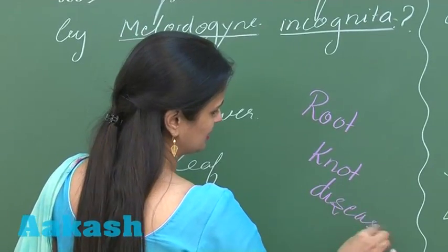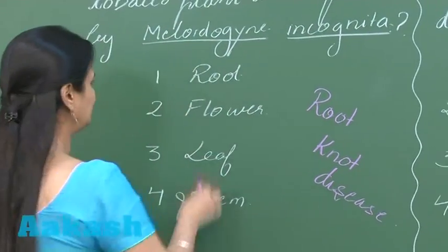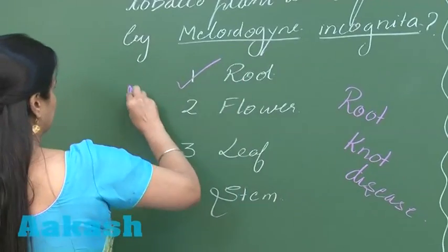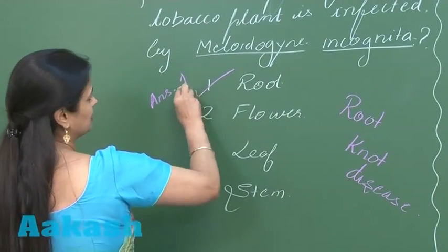So it means the part which is infected in the tobacco plant—that is root here. So the right answer here is option number 1.